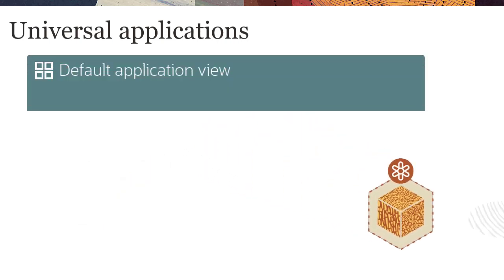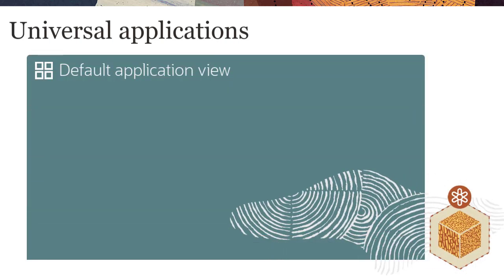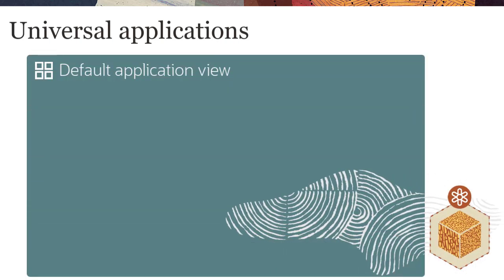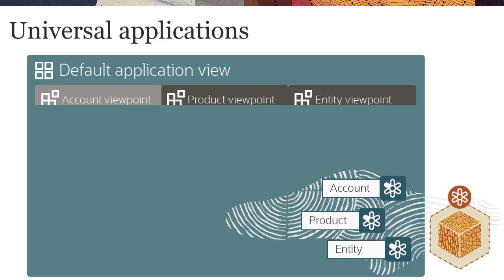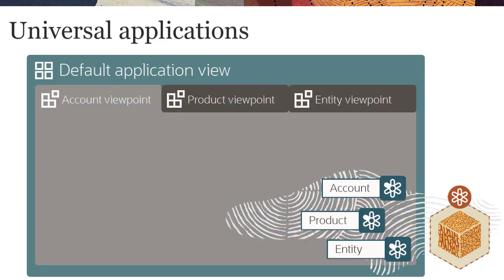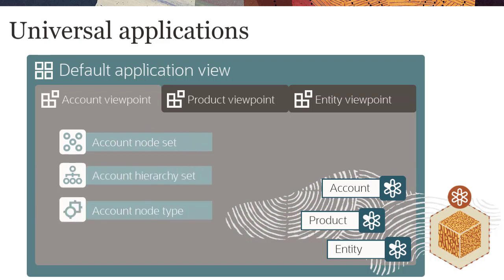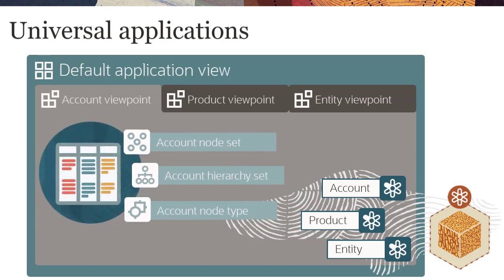The registration process creates an application and a default view. For each registered dimension, the registration process creates a viewpoint, the data chain objects used to define the viewpoint, and business validation rules. The data chain objects not only manage the data for you, but also apply rules to the data.